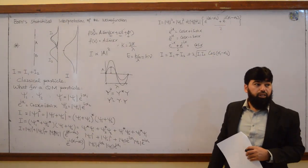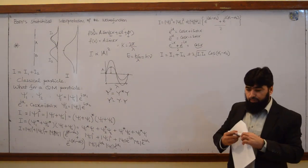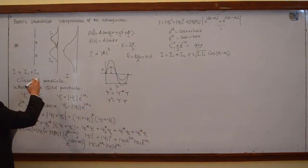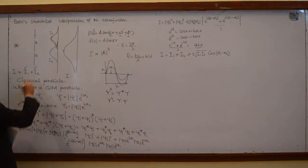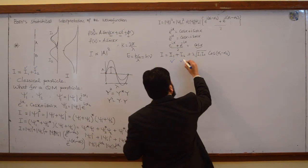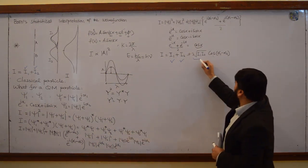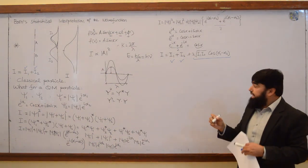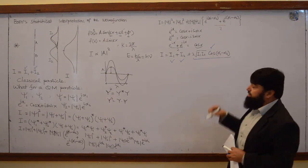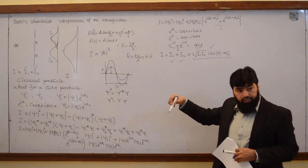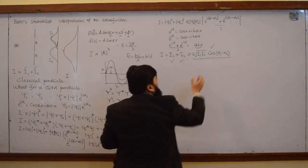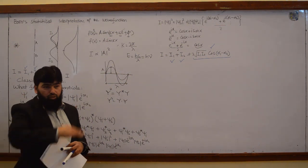So we got something additional here for the quantum mechanical particle. The classical particle was having its intensity as just the sum of i₁ and i₂, while the quantum mechanical particle got i₁, got i₂, but also got this additional term. And this additional term is not fixed — cos x is oscillatory, it is oscillating.